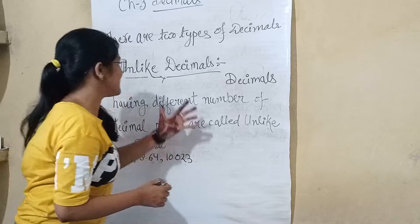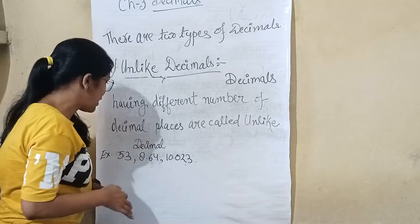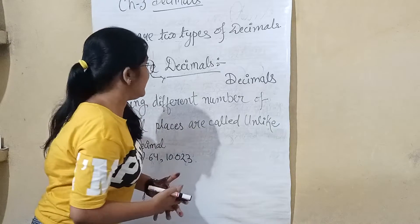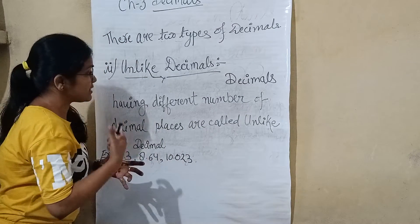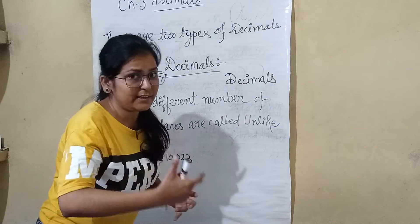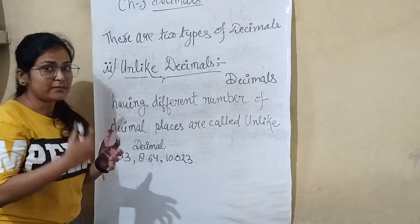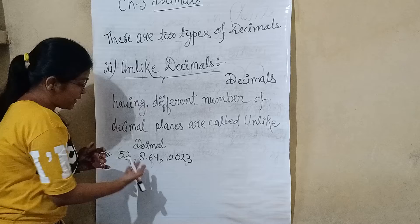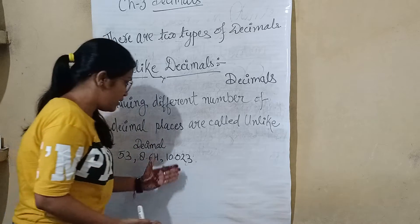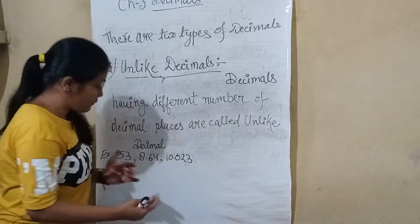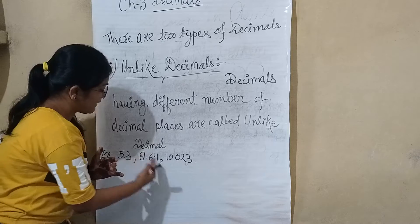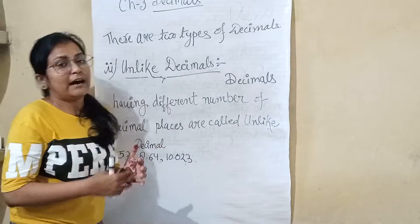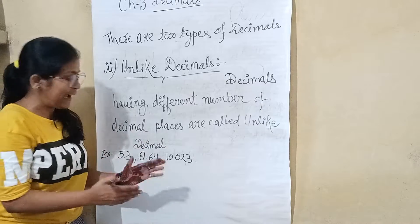Unlike decimals are decimals having a different number of decimal places. For example: 5.3, 8.64, and 10.03. You can see that they have one, two, and two decimal digits respectively, so the number of decimal places differs.